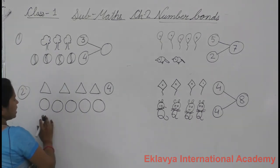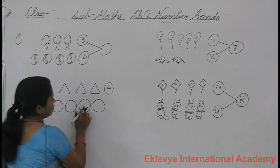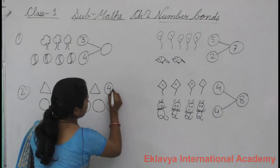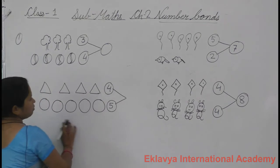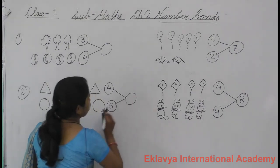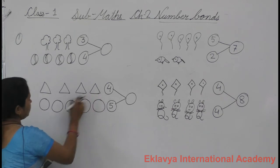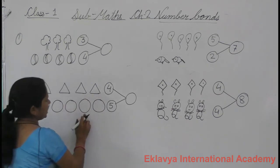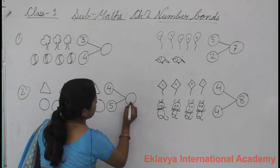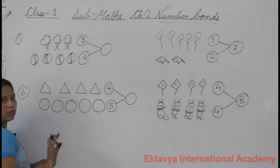Circles. How many circles? One, two, three, four, five. There are five circles. And count both. One, two, three, four, five, six, seven, eight, nine. So put the number nine.